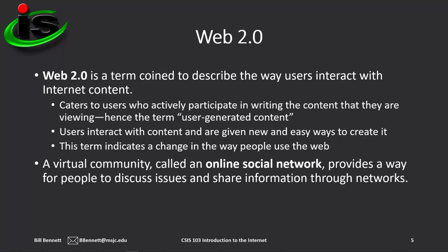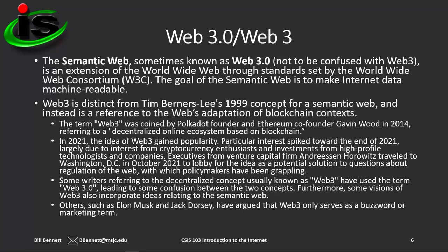Web 2.0 users interact with content and are given new and easy ways to create it, indicating a change in the way people use the web. A virtual community called an online social network provides a way for people to discuss issues and share information through networks. There are also upcoming iterations: the semantic web, sometimes known as Web 3.0, is an extension of the World Wide Web through standards set by the World Wide Web Consortium, the W3C, with the goal of making Internet data machine-readable.